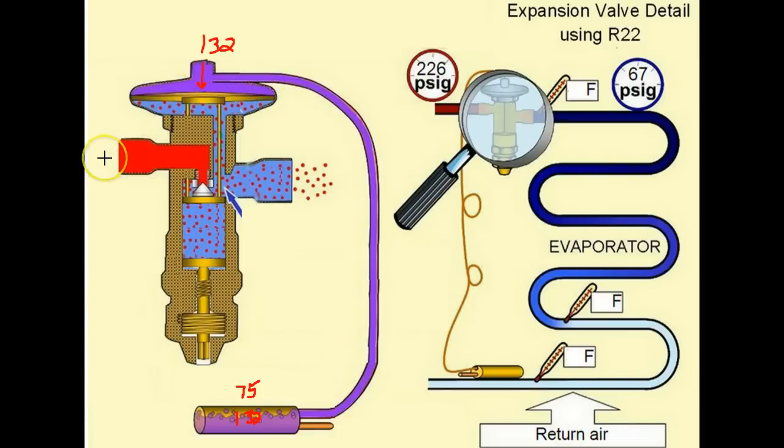Now the compressor has started. We have some refrigerant flowing through this TXV. And after a few minutes, this coil temperature might raise up a bit. Let's say the coil temperature is now 60 degrees.